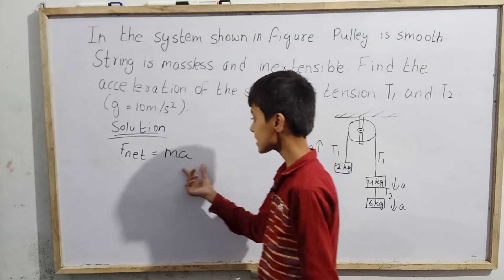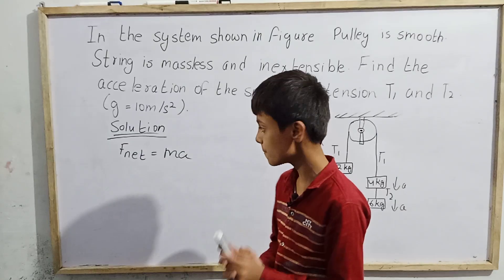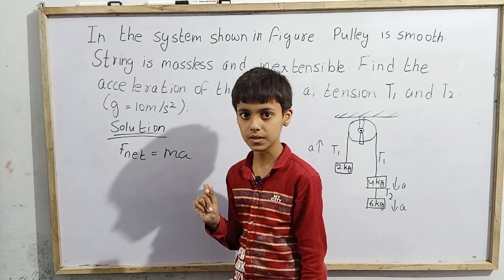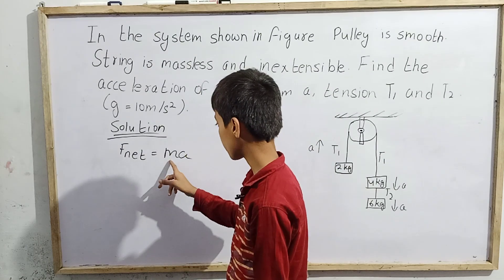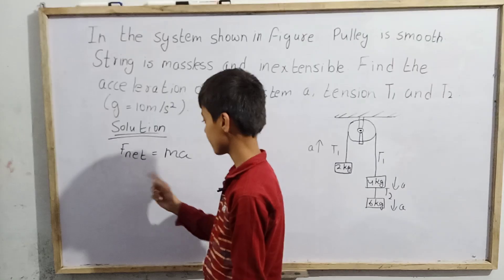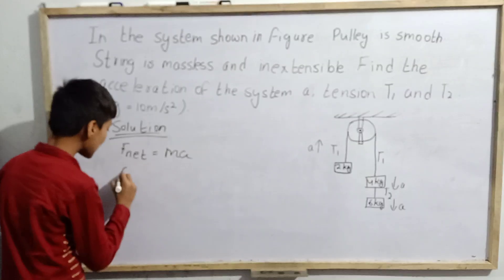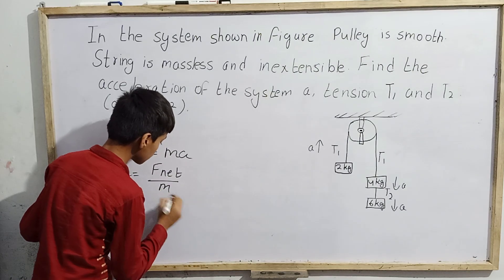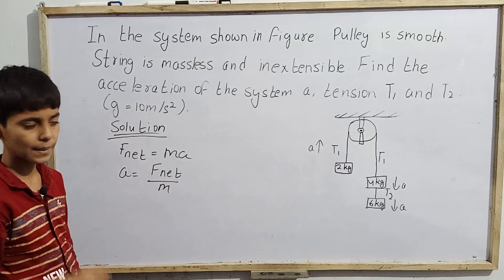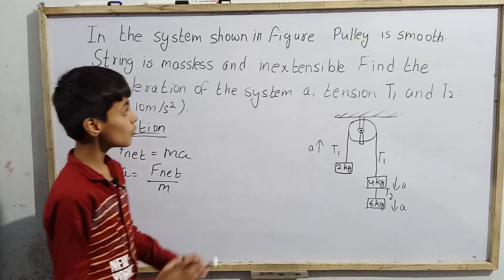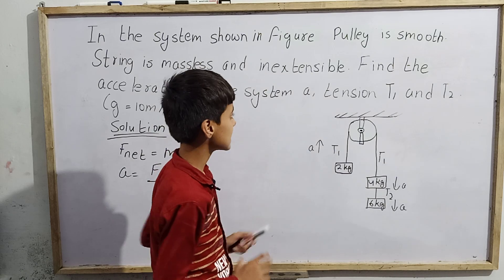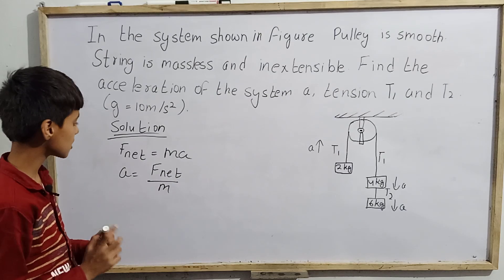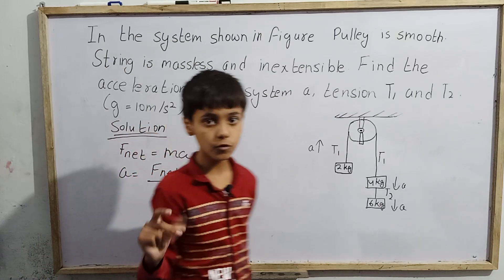If we have net force over any system, we can define it as total mass of the system multiplied by acceleration. Rearranging, acceleration equals net force divided by total mass of the system. Using this single formula we can find the acceleration — we need the net force and the total mass.